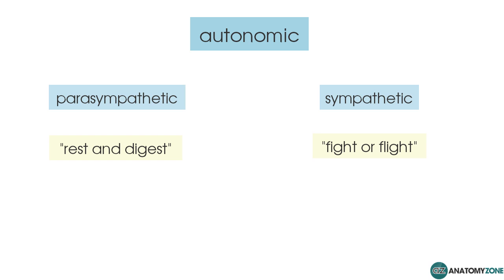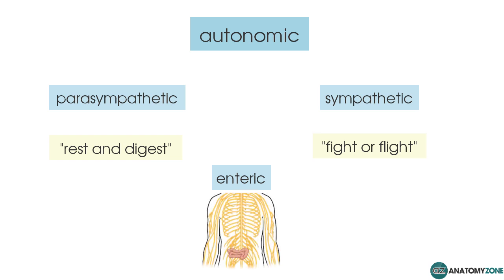These divisions are distinct both functionally and anatomically. The final division of the autonomic nervous system — the third division, which is less talked about — is the enteric nervous system. This is located in plexuses within the gastrointestinal system and is responsible for controlling smooth muscle and glandular tissue in the digestive system.